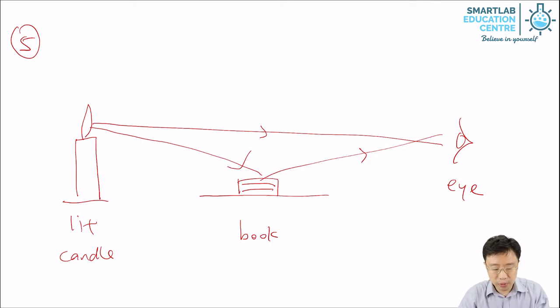Now, light traveling from the candle flame to the book, hitting the book, bouncing off the book into the eye—this process is called reflection, and this is what we are going to study next.